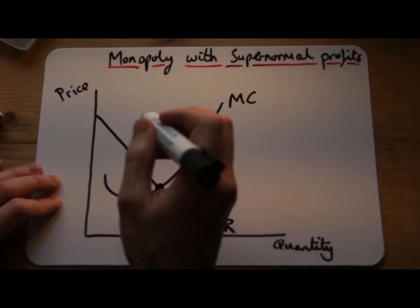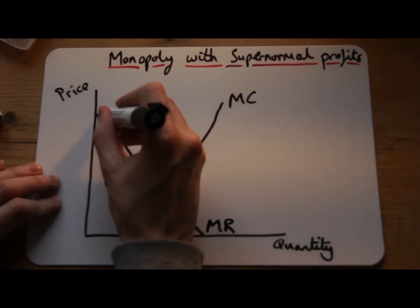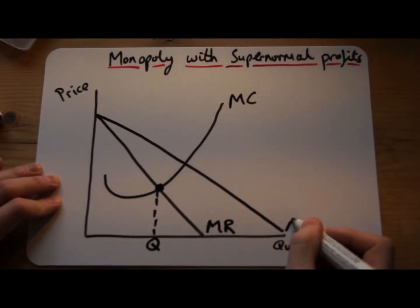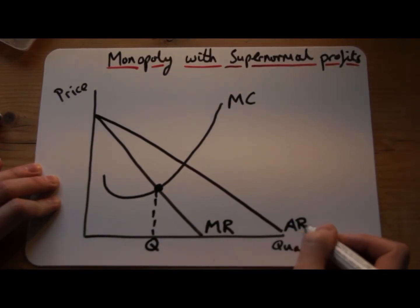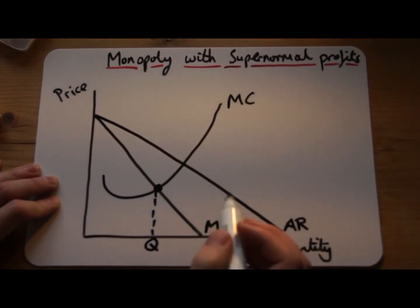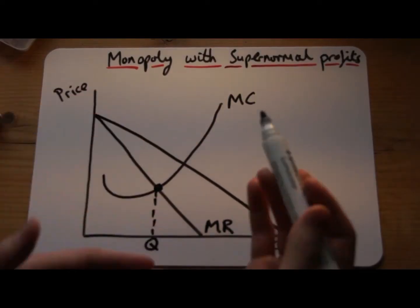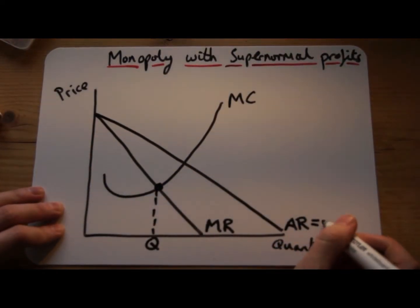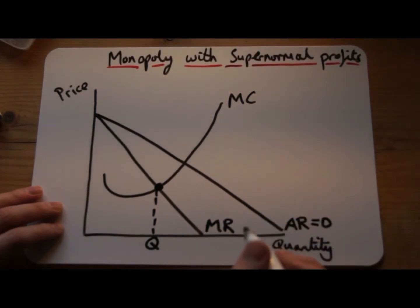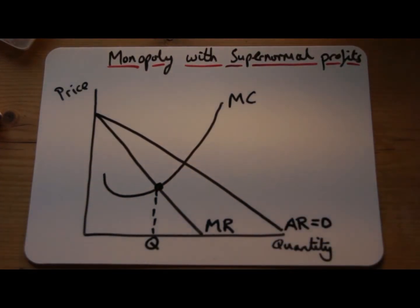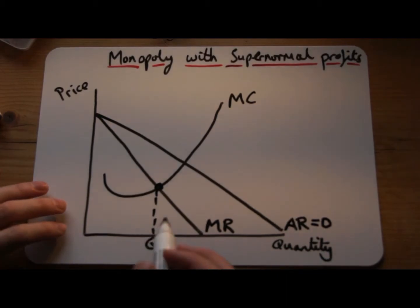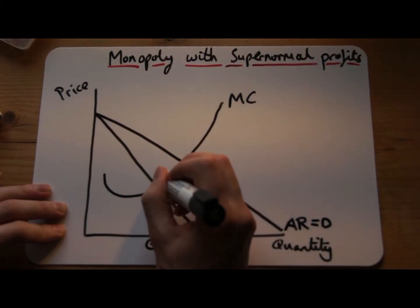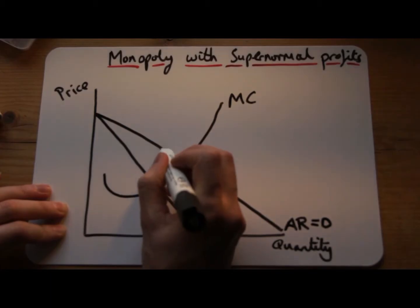The next thing is to put in the average revenue line. Make sure the marginal revenue line is double the steepness of average revenue. I also like to label it as demand, because average revenue is the same as demand. Then go from the profit-maximising point up to the demand line to find the price level.